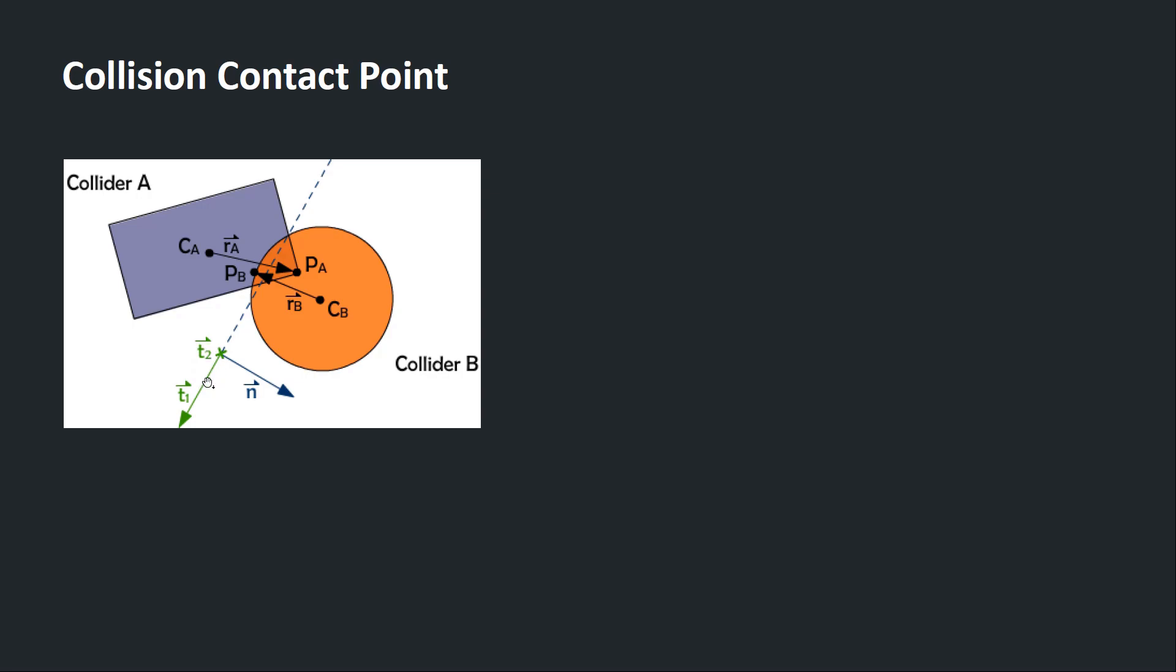T1 and T2 are the two contact tangent vectors. The essential part of this contact info is PA, PB, and N.